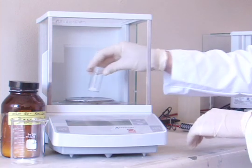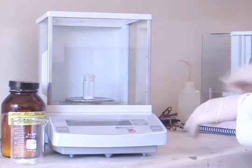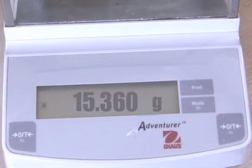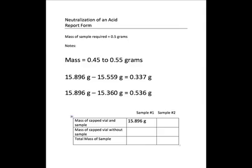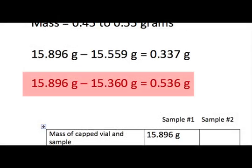The mass of the vial and remaining contents now reads 15.360 grams. This means that the mass of the solid in the beaker is 15.896 minus 15.360 grams, and the mass of the sample is 0.536 grams. This is within our parameters.